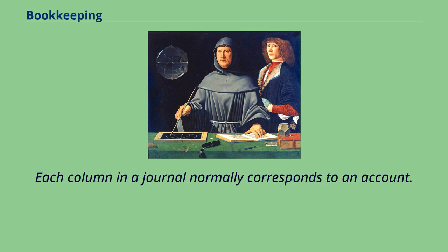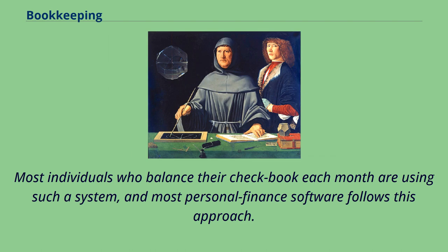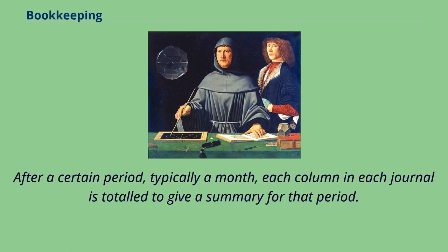Each column in a journal normally corresponds to an account. In the single-entry system, each transaction is recorded only once. Most individuals who balance their checkbook each month are using such a system, and most personal finance software follows this approach. After a certain period, typically a month, each column in each journal is totaled to give a summary for that period.